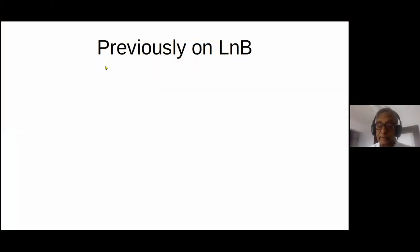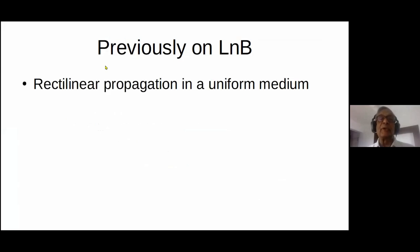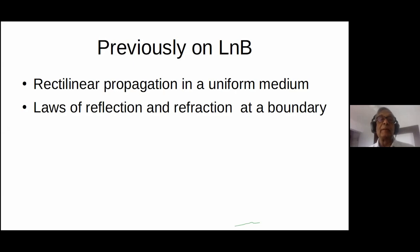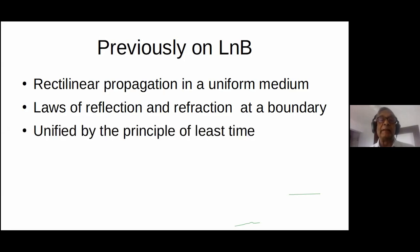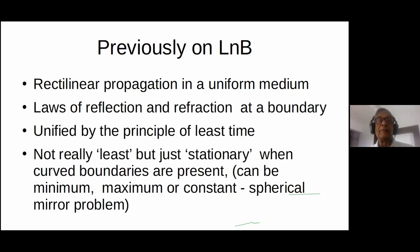Like a good TV serial, I'm supposed to tell you what happened in the previous installment. Well-known properties of light, like going in a straight line if the medium is uniform. And if you have a boundary between two uniform media, you have the well-known laws of reflection and refraction. They all get unified by the Fermat principle. It used to be called the principle of least time, but maybe it's better to just call it the Fermat principle, because we saw situations in which it's not the least time — it's just stationary time. So it could even be a maximum.